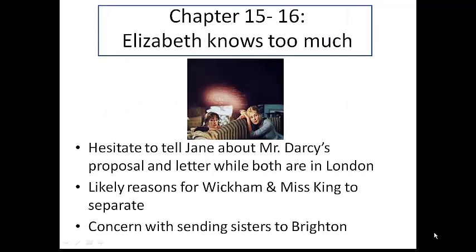She really starts to develop a sincere affection for Darcy, even if she's not able to admit it to herself fully. In chapters 15 and 16, the audience gets to see what Elizabeth does with her new knowledge. She hesitates to tell Jane about Mr. Darcy's proposal and the letter while both of them are in London. The most likely reason is she's still trying to protect Jane. She fears Jane might be really upset to hear that Mr. Bingley doubted her affections, and that's the reason he distanced himself from her. She also now, with her background knowledge of Mr. Wickham, has a new perspective on the likely reasons that he and Miss King are no longer in a relationship.